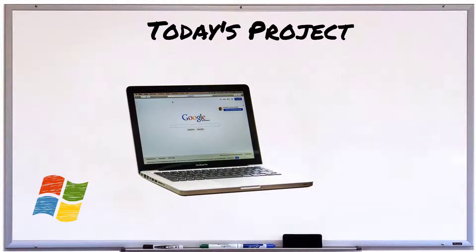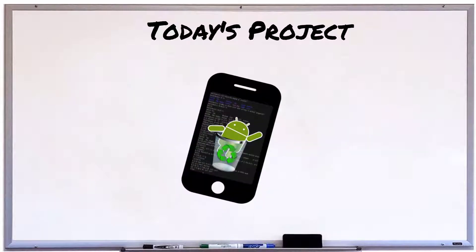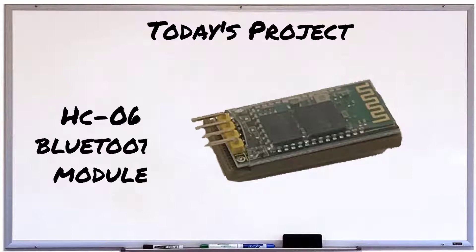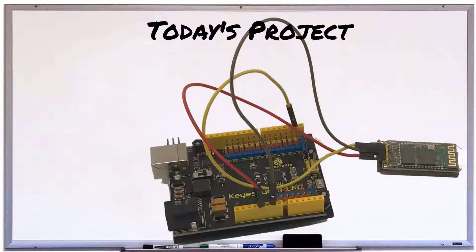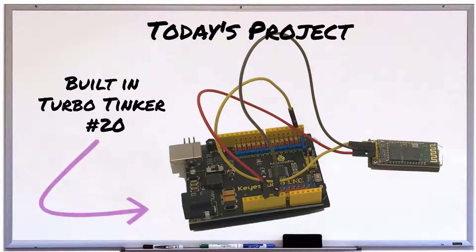You'll need a Windows computer, Mac, or Raspberry Pi, and an Android phone or tablet. You'll also need a Bluetooth device to connect to. I'm going to connect to the HC06 Bluetooth module that I connected to the Arduino in TurboTinker 20.